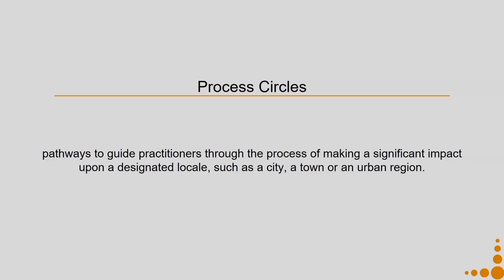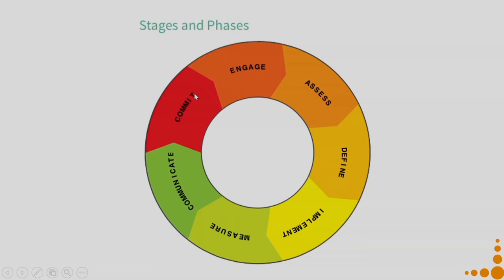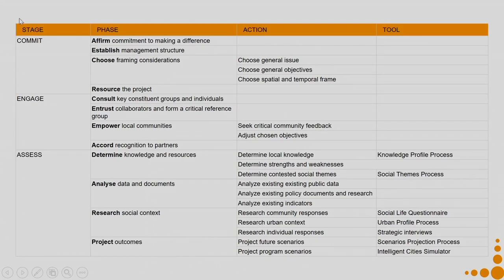Now let us come to the Process Circles. Process Circles are pathways to guide practitioners through the process of making a significant impact upon a designated locale such as a city, a town or an urban region. Say you as a designer who wants to create a sustainable impact — you will have to follow certain processes. The Process Circle consists of stages and phases: commit, engage, assess, define, implement, measure, and communicate. Each of these stages consists of certain phases; you can take these actions using certain tools which have been designed within the scope of this particular Circles Project. The website gives you an idea — there you can see many of these tools.